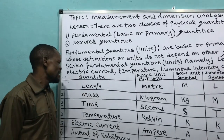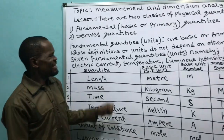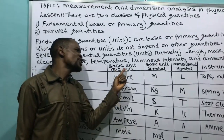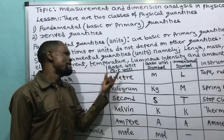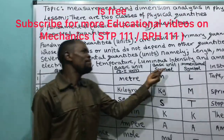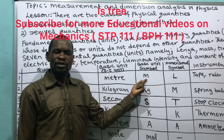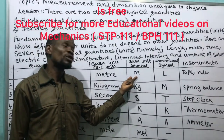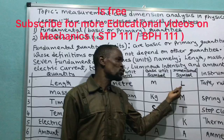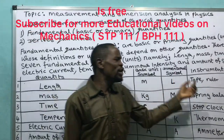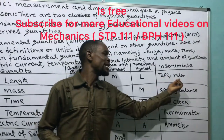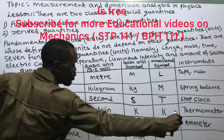The first quantity is length. The basic SI unit of length is the meter. The basic symbol is 'm.' The dimensional symbol for length is capital L. The instrument we use to measure length is a tape measure and a ruler.